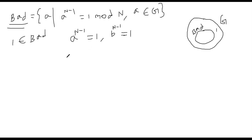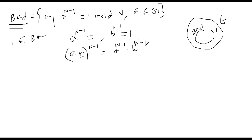What can we say about a·b? We need to show a·b belongs to bad, meaning (a·b)^(n-1) ≡ 1 mod n. This is easy to show because (a·b)^(n-1) = a^(n-1) · b^(n-1), by basic properties of exponents and multiplication. That is clearly 1 since each component is 1, which implies a·b is an element in the bad set. So we proved the closure property.